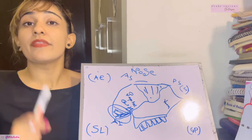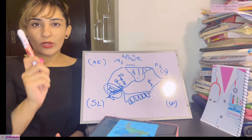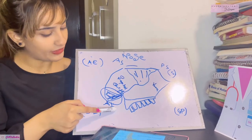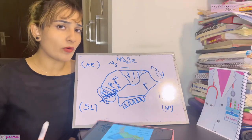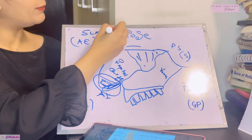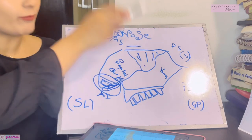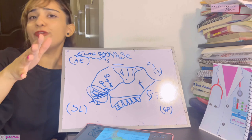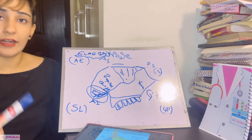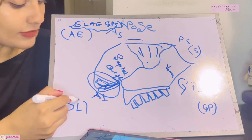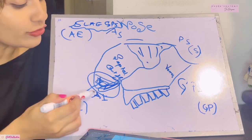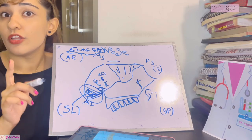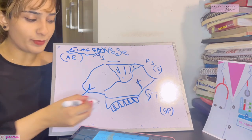Now let's talk about the arterial supply of the nasal septum — a very important exam question. Divide the entire nasal septum into four quadrants: anterosuperior, anteroinferior, posterosuperior, and posteroinferior. Remember the mnemonic SLAEGPS — going from below upwards, then below upwards again. SL stands for the septal branch of the superior labial artery, which supplies the anteroinferior quadrant — also known as the vestibule of the nasal septum.